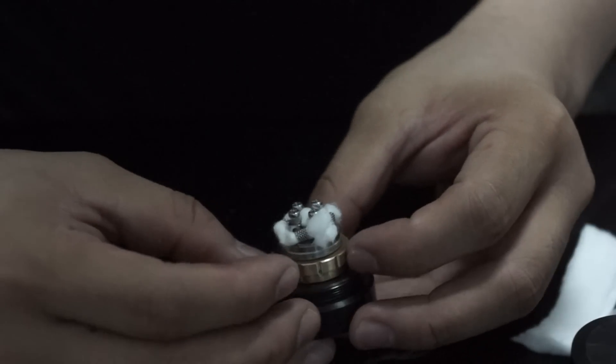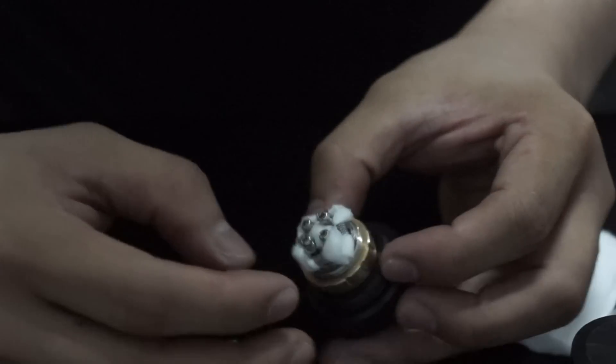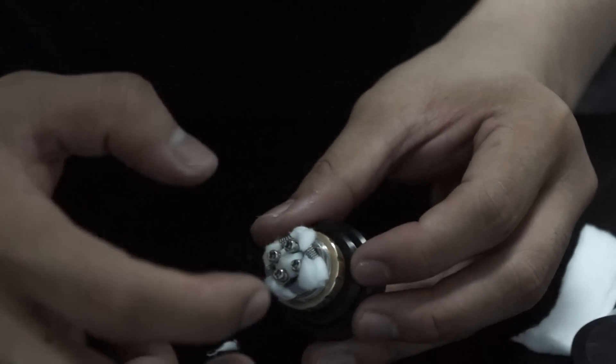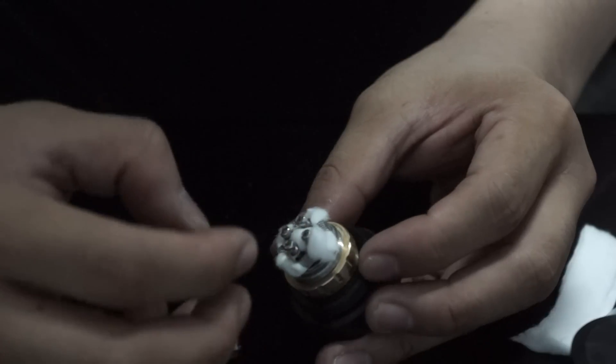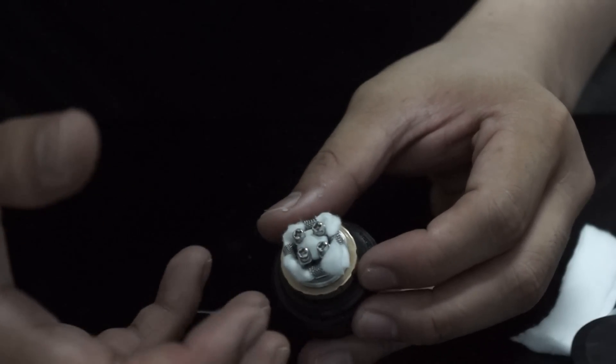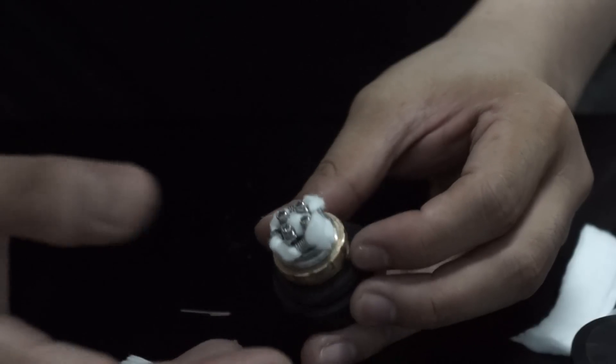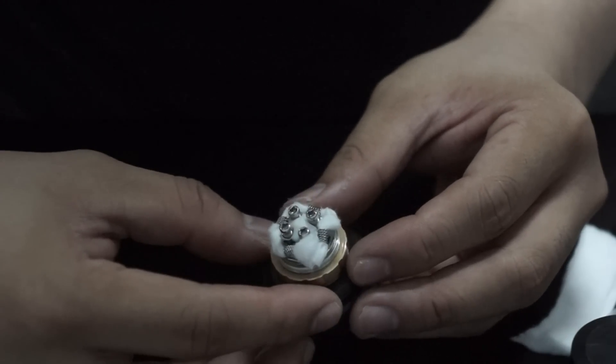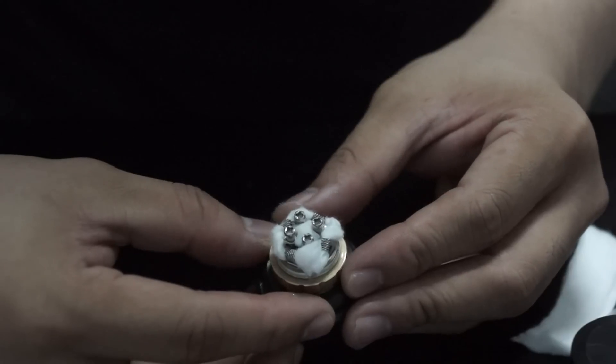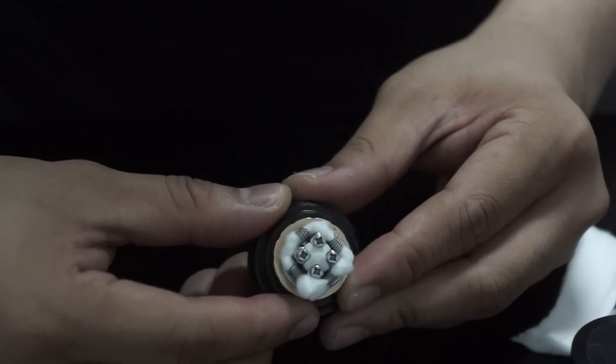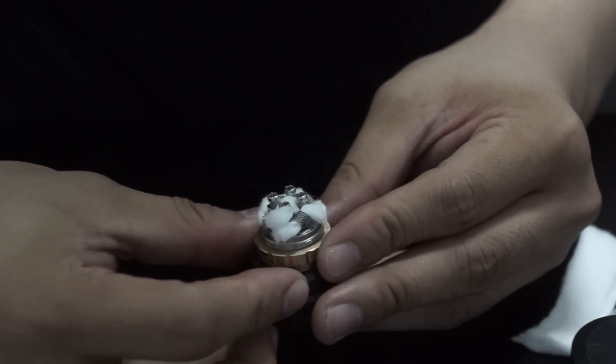So what it does is that if you have cotton on your base, once you screw the top cap on it, the whole base will act as your juice well. And that will minimize the possibility of leaking through the air holes.